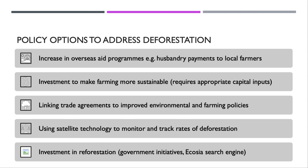Some countries are now looking to link trade agreements to improved environmental farming policies — essentially saying: if you want access to rich nation markets, you have to strengthen your environmental protection. Technology could also be a factor, particularly using the latest satellite technology to measure, monitor and track how quickly deforestation is happening. Investment in reforestation programmes is another option — many governments are already doing that, Ethiopia being a good example recently. There are lots of value judgments here about which policy options might be most effective, most efficient, and most equitable over time.